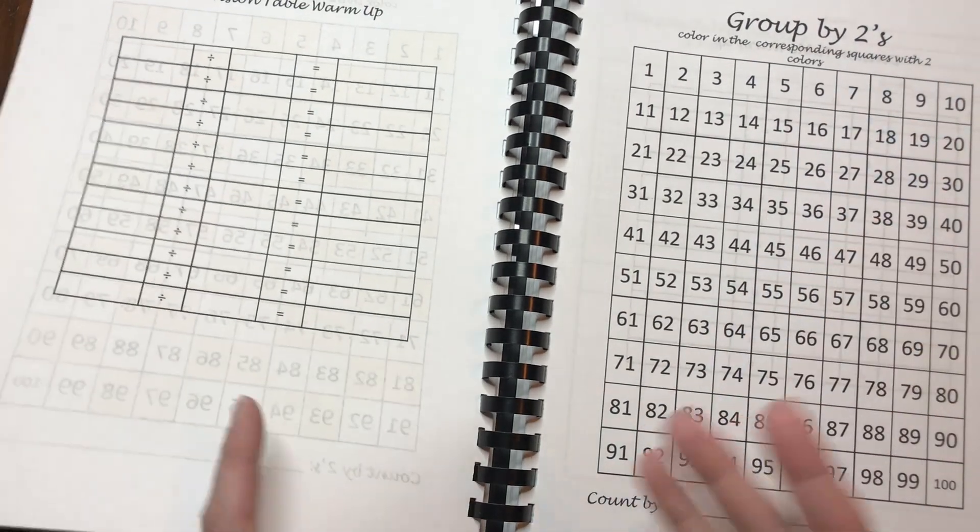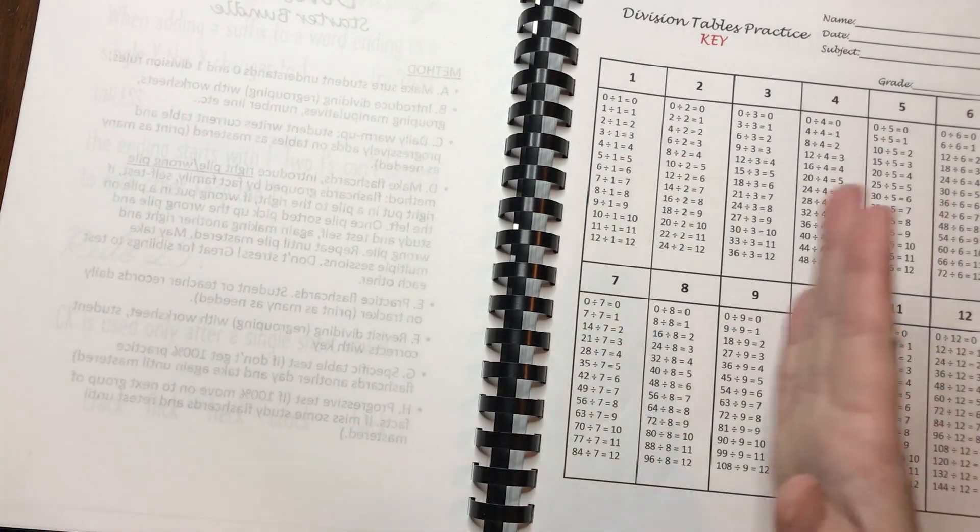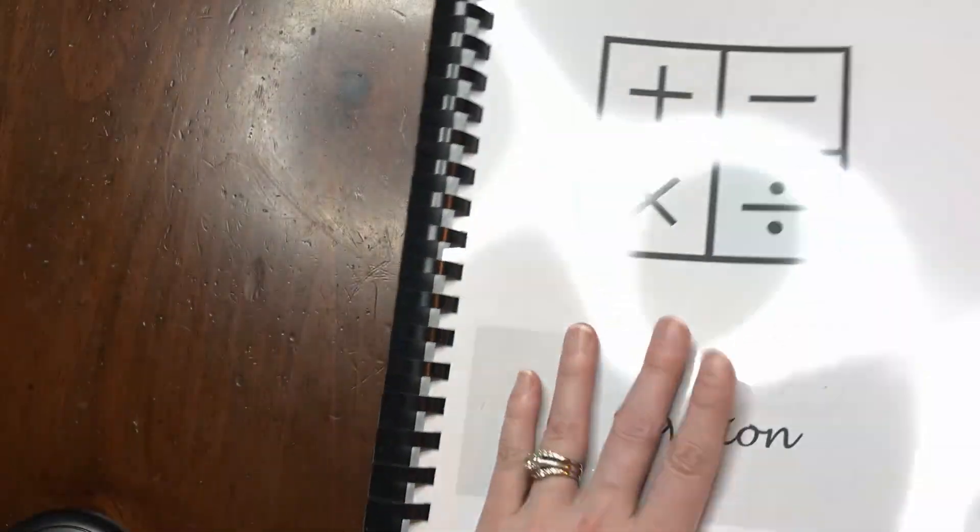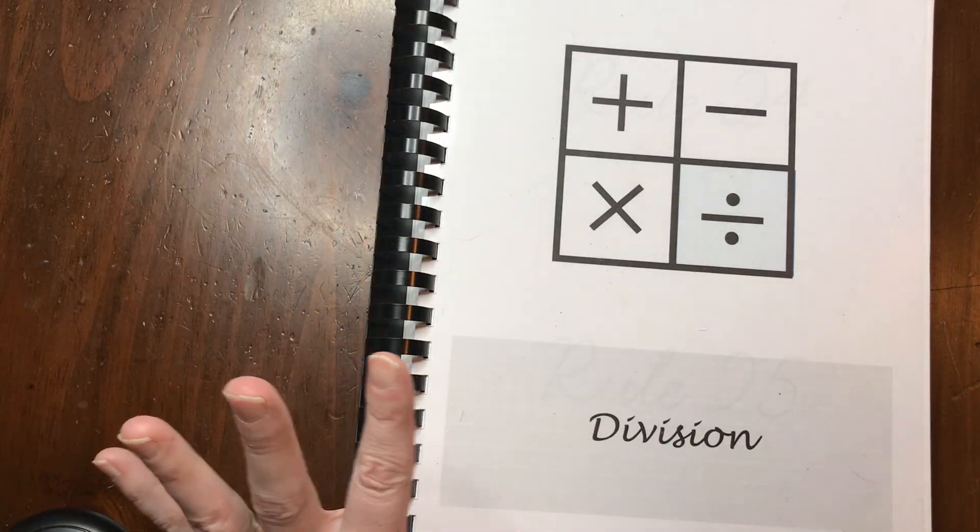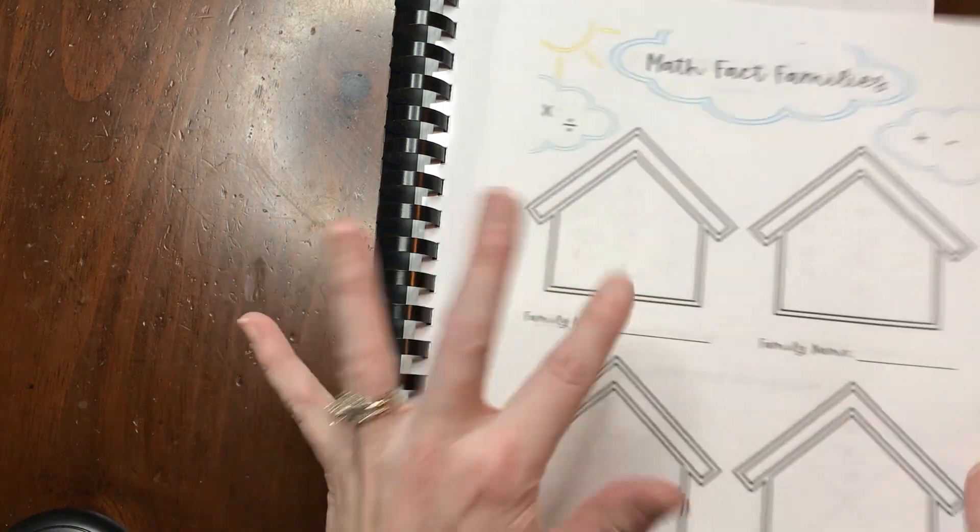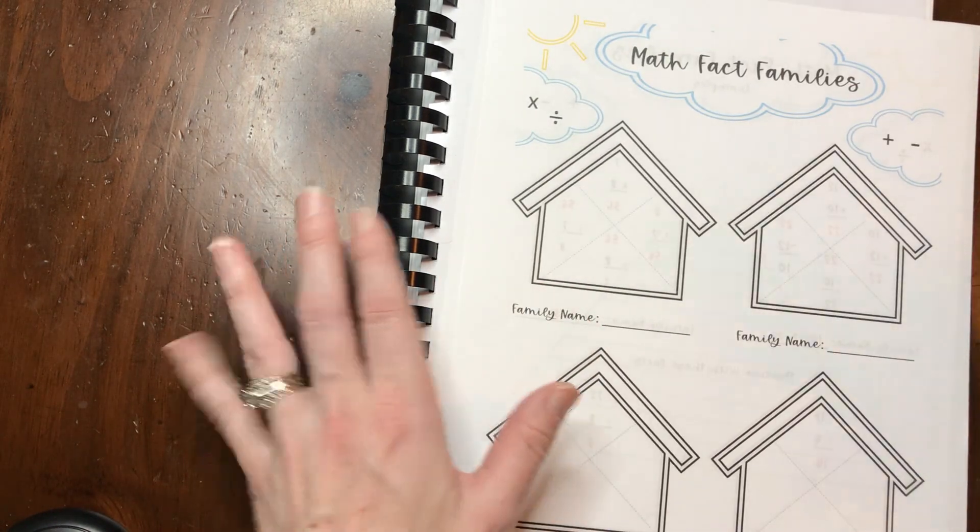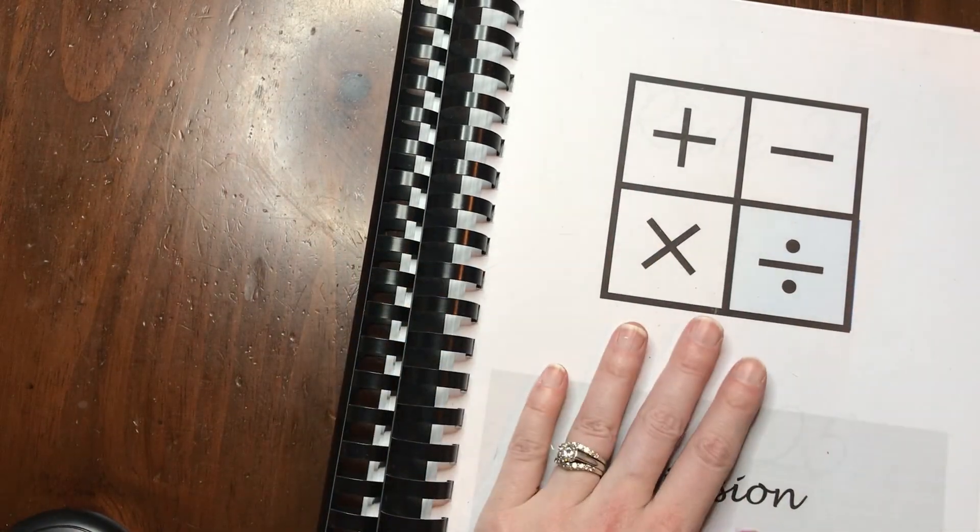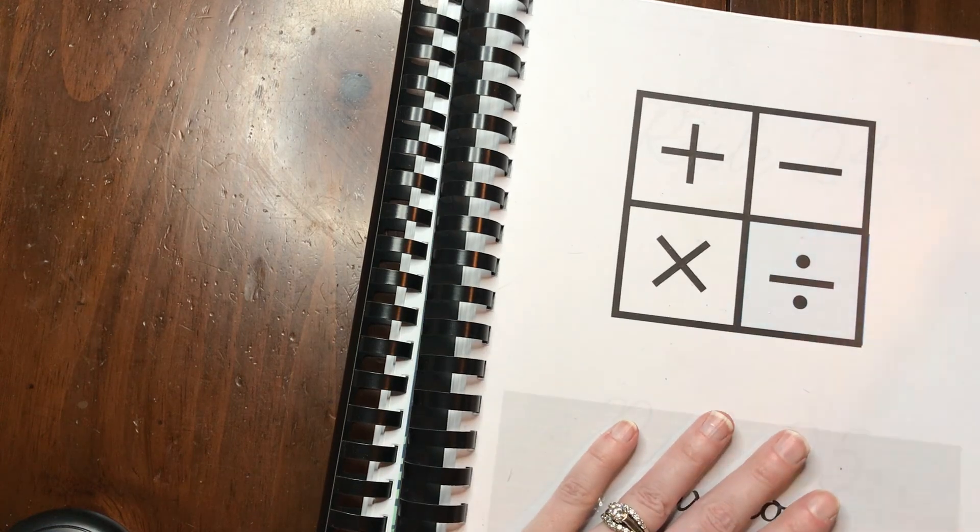That's going to be their warm-up, to write in whatever division table that they're working on at that time and then they'll have whatever they're working on. Then we always follow up with flashcard work for like 10 minutes, right pile, wrong pile, and then a math game, a no prep math game. That's what I like about this is it really simplifies my life.